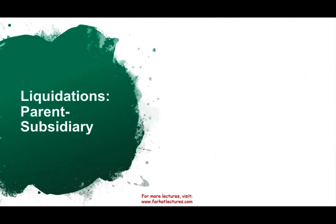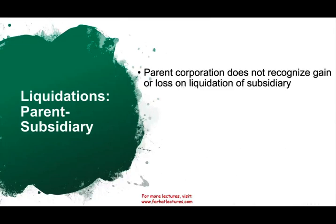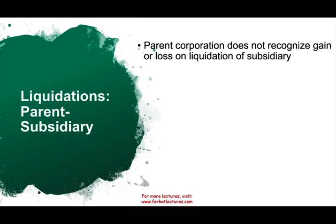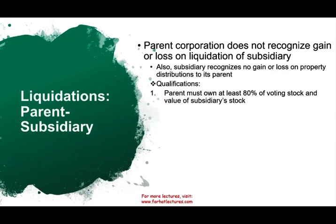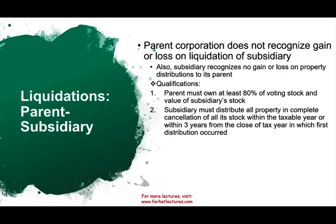Let's look at liquidation between a parent and subsidiary. The general rule is the parent does not recognize gain or loss on the liquidation — in substance, nothing really happened; all we did is take one corporation and merge it into another. Also, the subsidiary recognizes no gain or losses on the distribution to its parent, as long as certain qualifications are met. The parent must own at least 80% of the voting stock and value of the subsidiary stock. The subsidiary must distribute all property in complete cancellation of its stock within the taxable year, or within three years from the close of the year in which the first distribution occurs. Very importantly, the subsidiary must be solvent — meaning they have more assets than liabilities. If they are insolvent, the parent will have to recognize a loss.